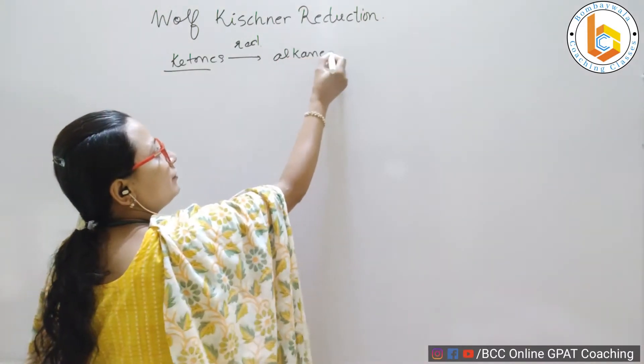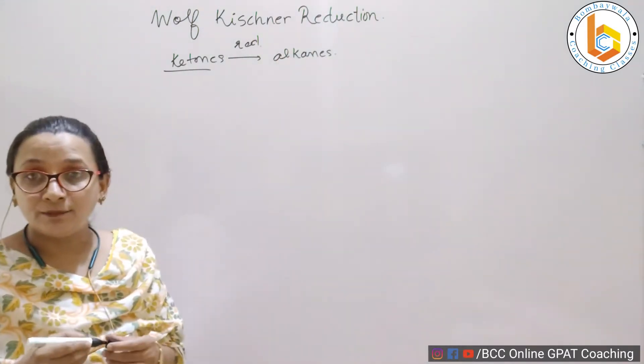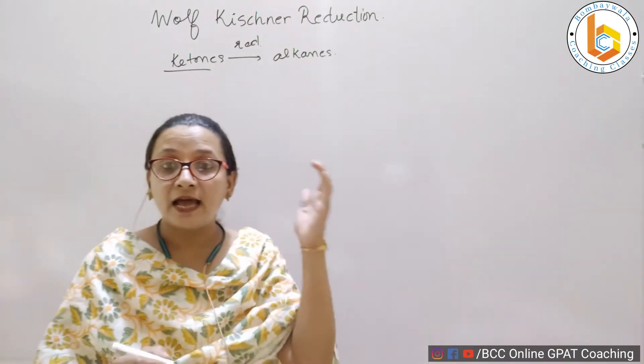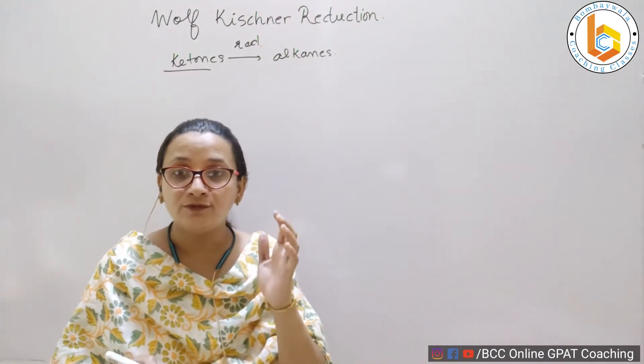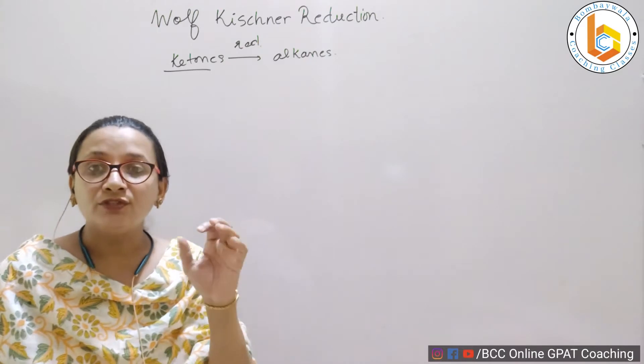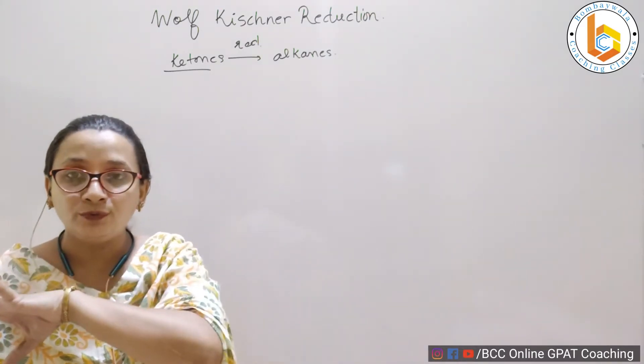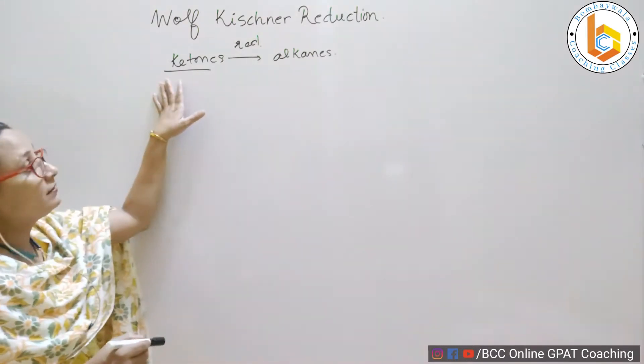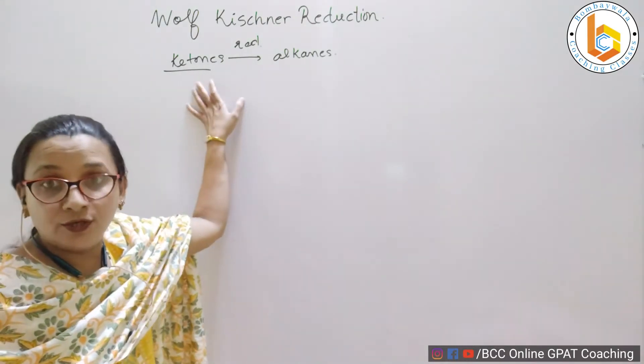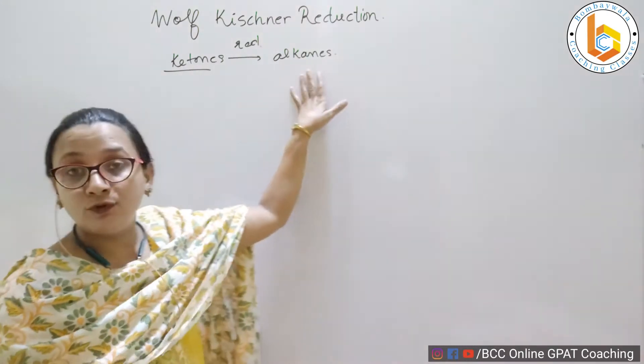From a long time when we are seeing the reactions of organic compounds, we always say that acids undergo reduction to give you aldehydes and ketones, which undergo reduction to give you alcohol, which undergo reduction to give you alkanes. So we are seeing a method by which ketones undergo reduction and directly give you alkanes.